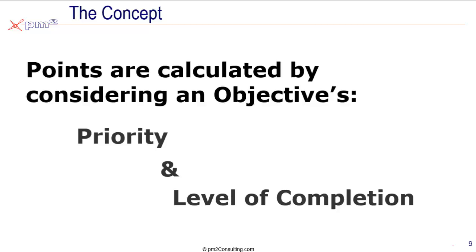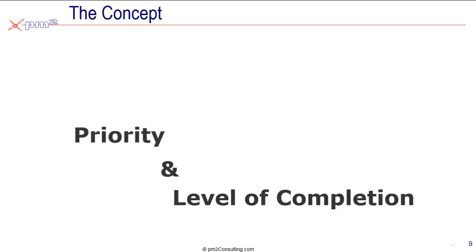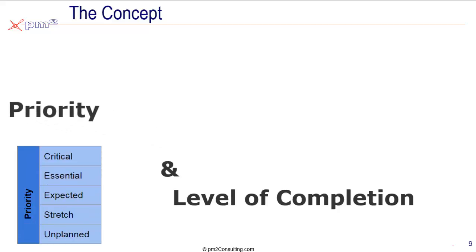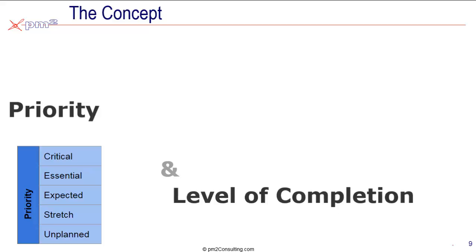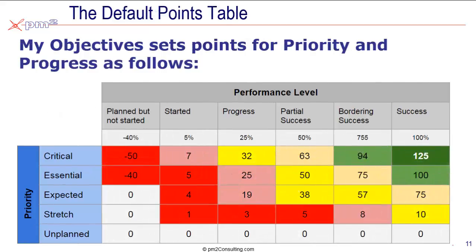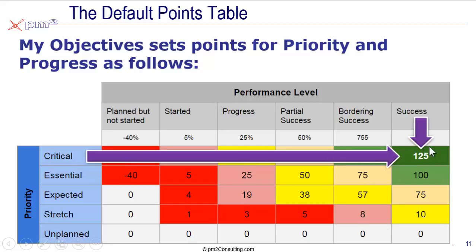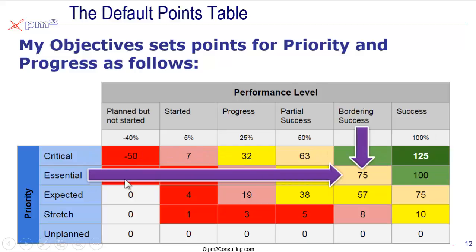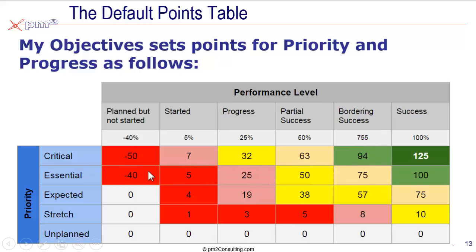Points are calculated based on both the priority and level of completion. We can set up a grid with priority on the left side — critical, essential, expected, stretch, and unplanned — and the level of completion across the top: planned but not started, started, progress, partial success, and so forth. We can then allocate points based on how you do in each cell. For example, if you have an objective that is critical and you've achieved success, you'd earn 125 points. Or if you have an essential objective and you hit bordering success at the end of the game, you'd earn 75 points. This table calculates the points earned based on the progress made and the priority of each objective.